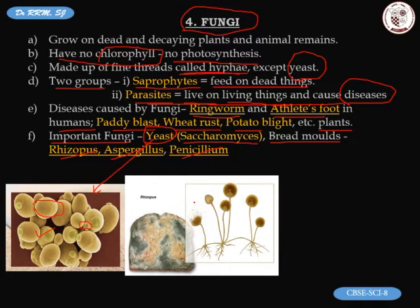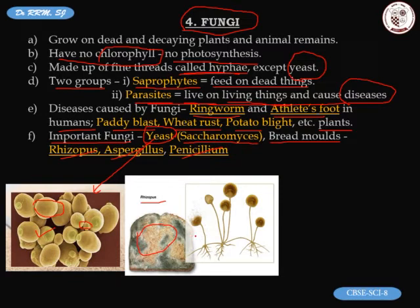Rhizopus grows on bread when you leave it standing for several days — that is the fungi causing bread to spoil. If you take a small portion and observe it under the microscope you see its characteristic structure, which is easy to draw in your copy.